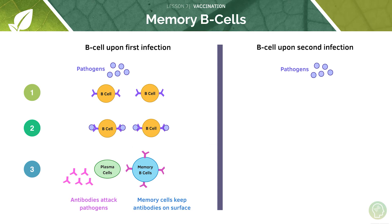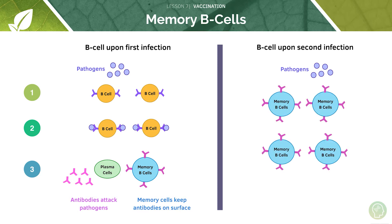Upon second infection — second exposure to the pathogen — these memory B cells, which already have the antibody specific to that pathogen on their surface and are circulating in the blood, are going to encounter the pathogen and divide into plasma cells to produce antibodies even more quickly than upon first infection.